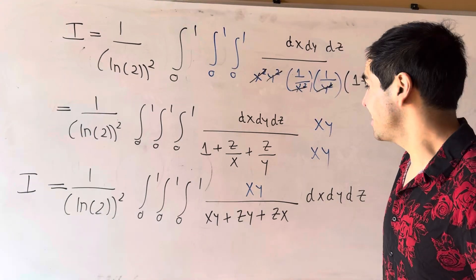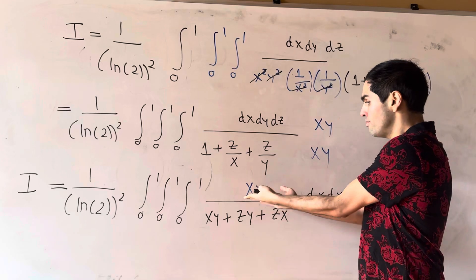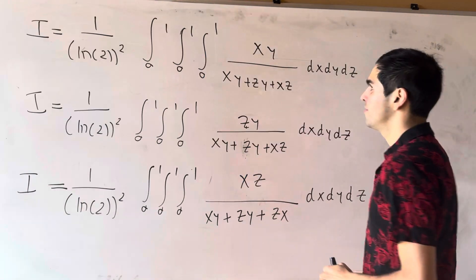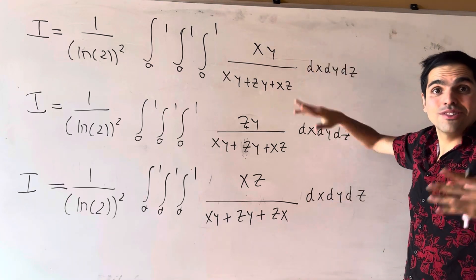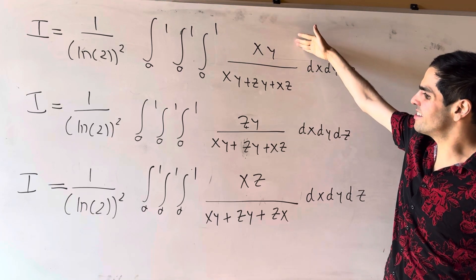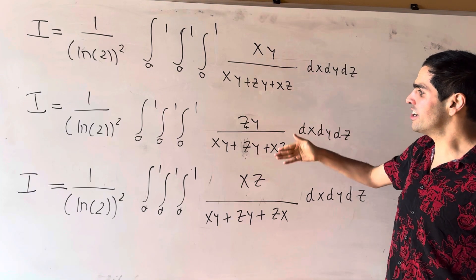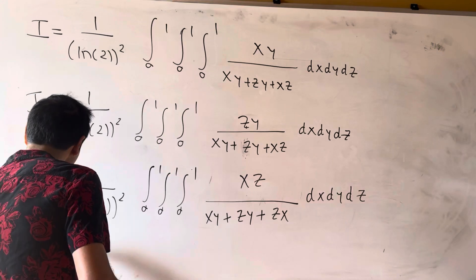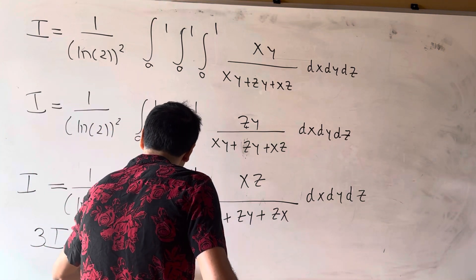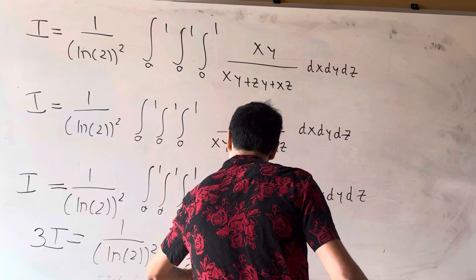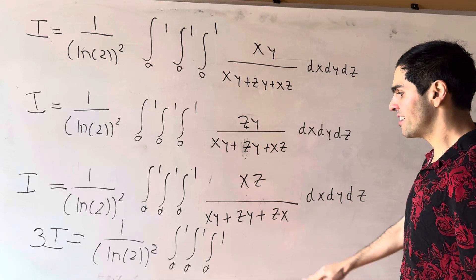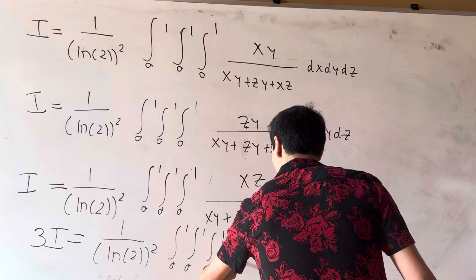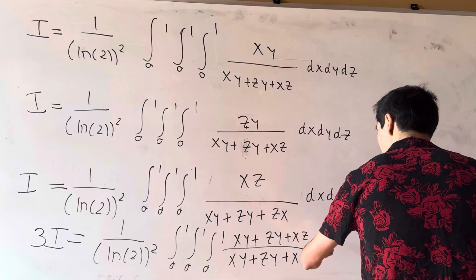It's this symmetry that really helps us. Since x, y, and z are arbitrary, we can write our integral I in three equivalent ways by renaming variables. We also get I = (1/ln(2)²) times the triple integral of xz/(xy+zy+zx), and also yz/(xy+zy+zx). Summing all three gives 3I = (1/ln(2)²) times the triple integral of (xy + zy + xz)/(xy + zy + xz) dx dy dz.